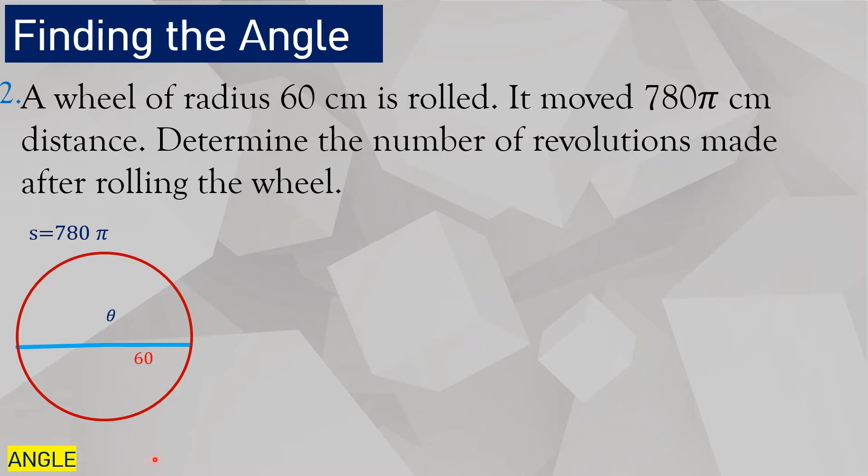A wheel of radius 60 centimeters. Imagine this one as a wheel with radius 60 centimeters. You roll the wheel, and it moves a certain distance. It moves 780 pi centimeters distance after you roll that particular wheel. Take note that it travels in a straight path. Now, determine the number of revolutions made after rolling the wheel.